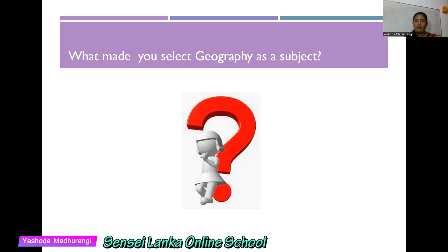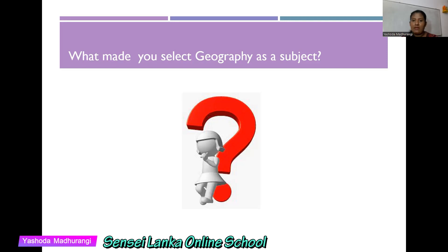What are the other reasons for you to select geography? One of you can tell me: teacher, I selected it because I am clever at it. Yes, really — if you are clever at this subject in grades 6, 7, 8 and 9, if you have got enough marks — flying colors, we say — more than 90 or more than 85 marks for this subject, spontaneously you select it. Nobody needs to force you, because when you have good marks at the term test or any other test, normally you select it. But being good at it and liking it is not enough. There are many other reasons also.